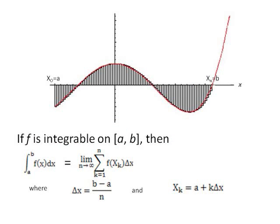In conclusion, if f is integrable on a to b, then the integral of f of x dx from a to b is equal to the sum of f of xk times delta x from k equal 1, as the limit of n goes to infinity, where delta x is equal to b minus a over n and xk is equal to a plus k delta x.